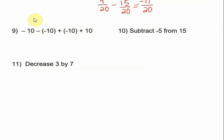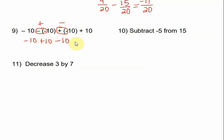Number 9: let's combine any touching signs into one sign. Negative and negative are the same, so that becomes plus. Positive and negative are different, so that's minus. We have negative 10 plus 10, minus 10 plus 10. Negative 10 plus 10 is 0, so that goes away. And another negative 10 plus 10 is also 0.